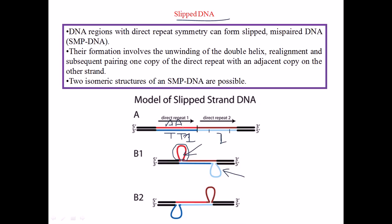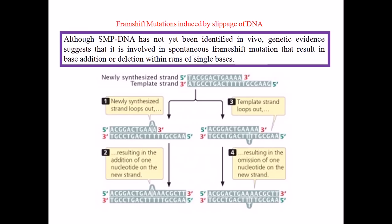The slipped DNA portion contributes to frameshift mutations and the incorporation of new codons, leading to the production of new amino acids to make different types of proteins. Sometimes it may cause a positive mutation; other times it may produce an anti-codon that results in termination of protein synthesis, shortening the actual polypeptide sequence — a negative impact.